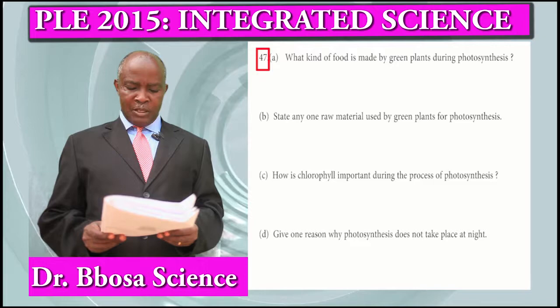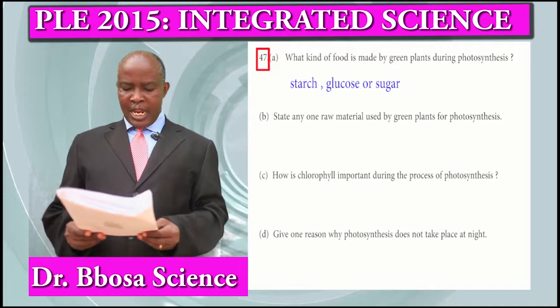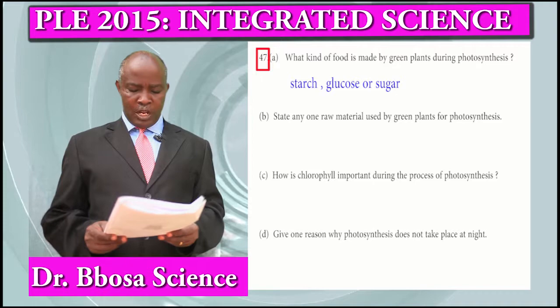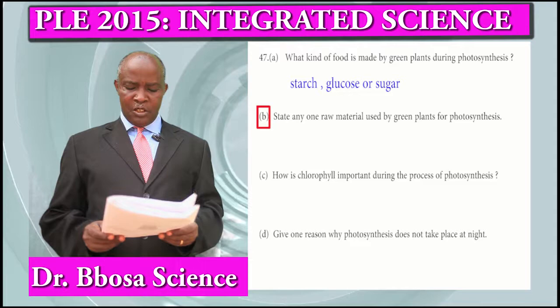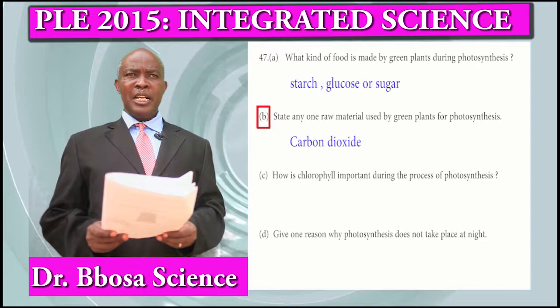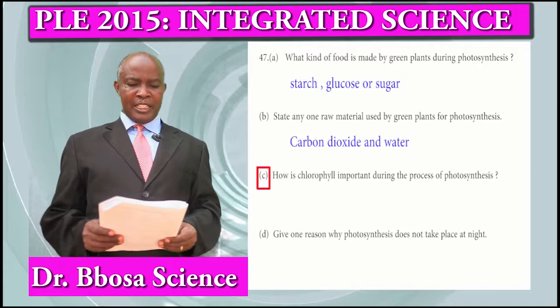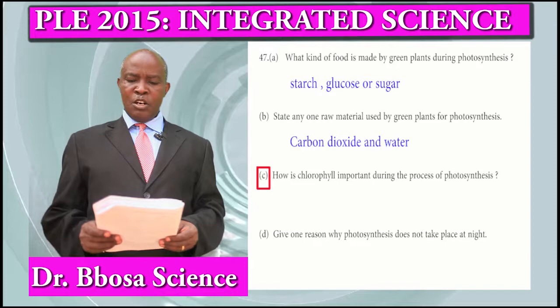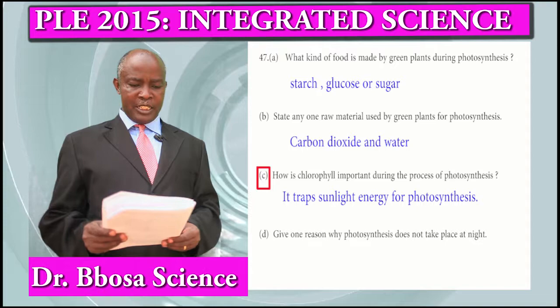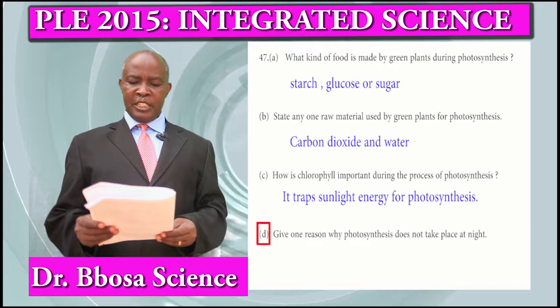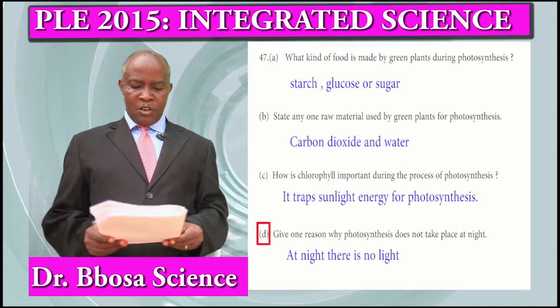Question 47a: What kind of food is made by green plants during photosynthesis? That is starch or glucose or sugar. Part B: State one raw material used by green plants for photosynthesis. It can be carbon dioxide or water. Part C: How is chlorophyll important during photosynthesis? It traps sunlight energy for photosynthesis. Part D: Give one reason why photosynthesis does not take place at night. At night there is no light.